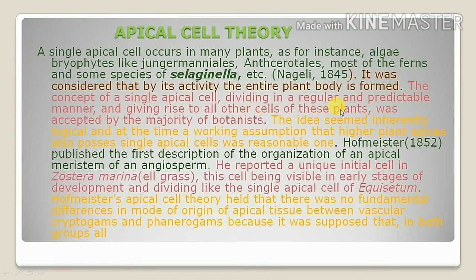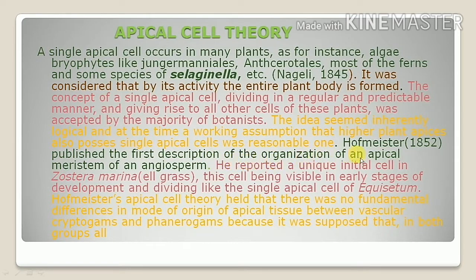It was considered that by the activity of the single apical cell, the entire plant body is formed. The concept of a single apical cell dividing in a regular or predictable manner and giving rise to all other cells was accepted by many botanists. This idea was further proposed by Hofmeister, who published the first description about the apical meristem of angiosperms.